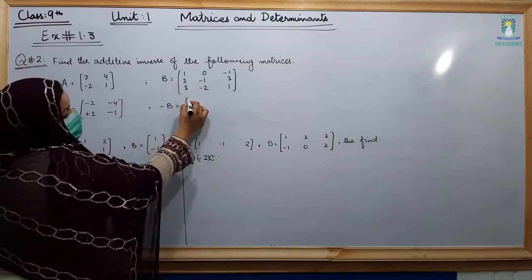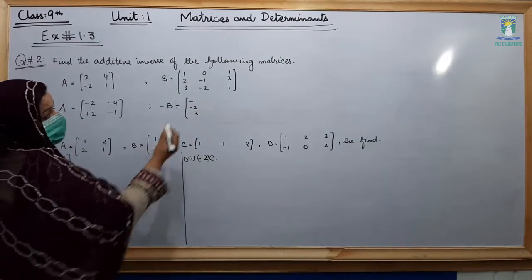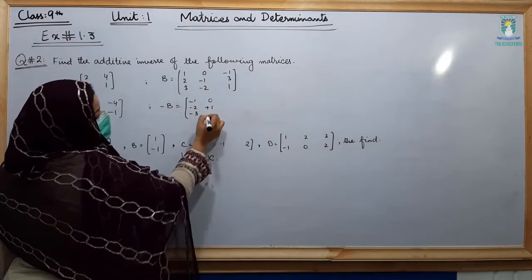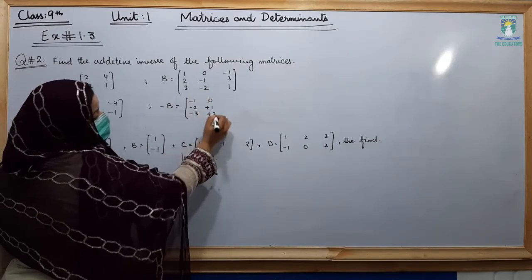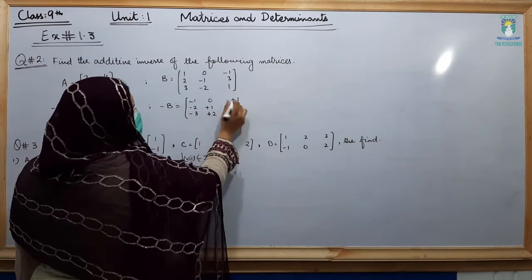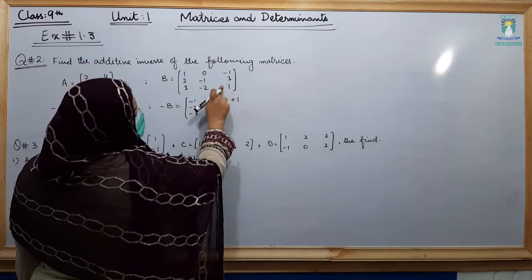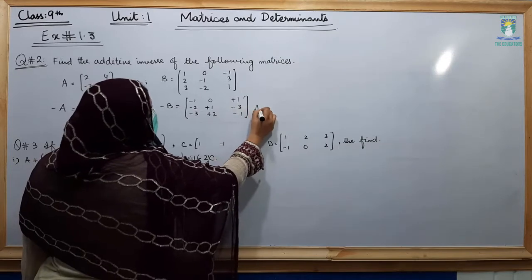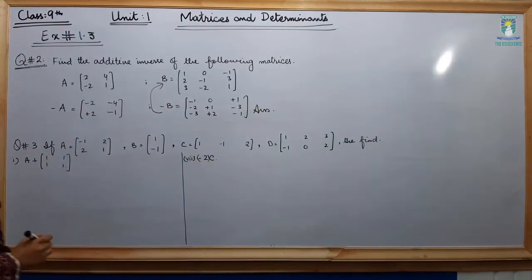Since all entries are plus, we are going to change all signs to minus. Here you have minus 1, so write plus 1. Here you have minus 2, so write plus 2. Minus 1 becomes plus 1, and change also the signs of 3 and 1 — they become minus 3 and minus 1. This is the additive inverse of matrix B.